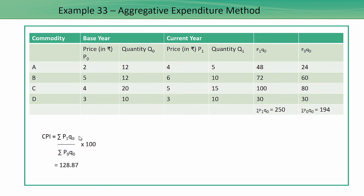So that would come to 250 divided by 194 multiplied by 100, so I'll get around 128.87. That is my CPI.